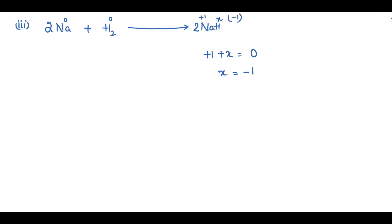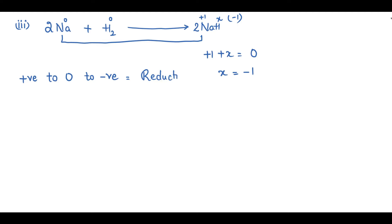If we are having a positive oxidation state going to zero, or zero going to a negative oxidation state, we will have reduction. If we are having a negative oxidation state going to zero, or zero going to a positive oxidation state, oxidation will happen.